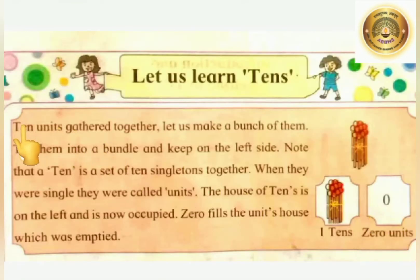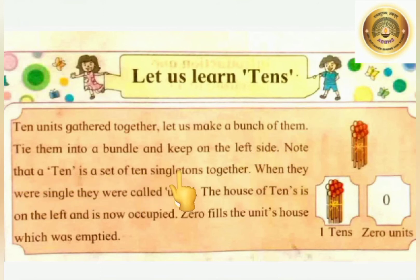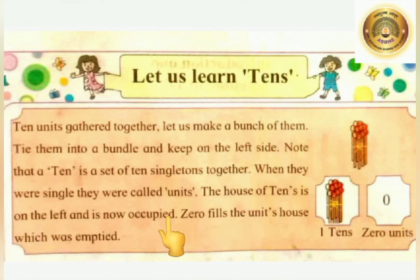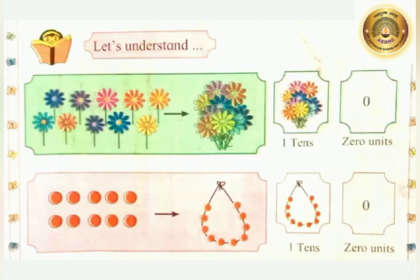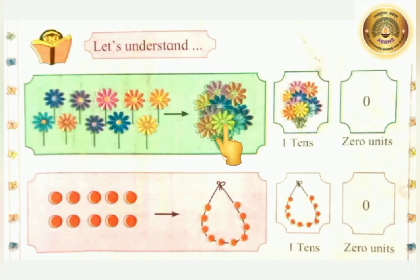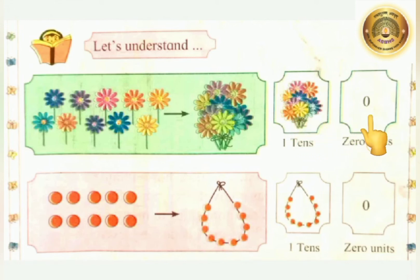Textbook page number 39: 10 units gather together. Let us make a bunch of them. Tie them into a bundle and keep on the left side. Note that a 10 is a set of 10 single ones. When they were single, they were called units. The house of 10 is on the left and is now occupied. 0 fills the unit's house which was empty. Here, 10 flowers are given. Count: 1 through 10. That bunch of 10 flowers is kept on the left side. Nothing is there on the right — nothing means 0 units.